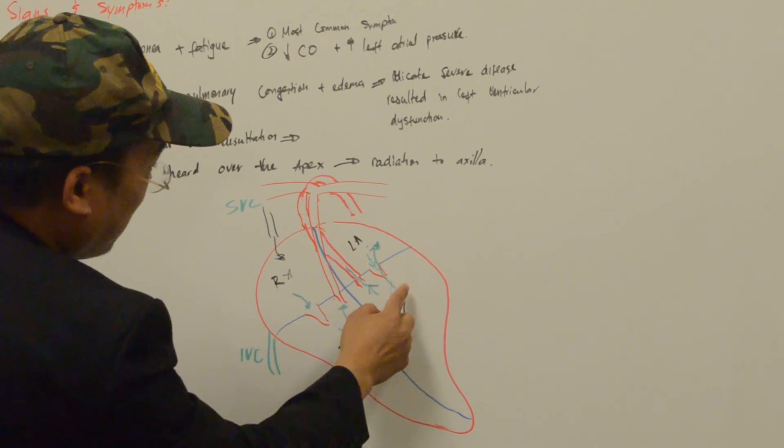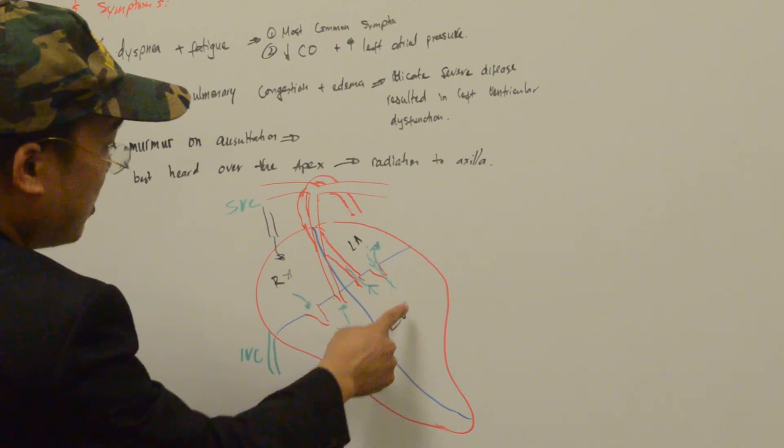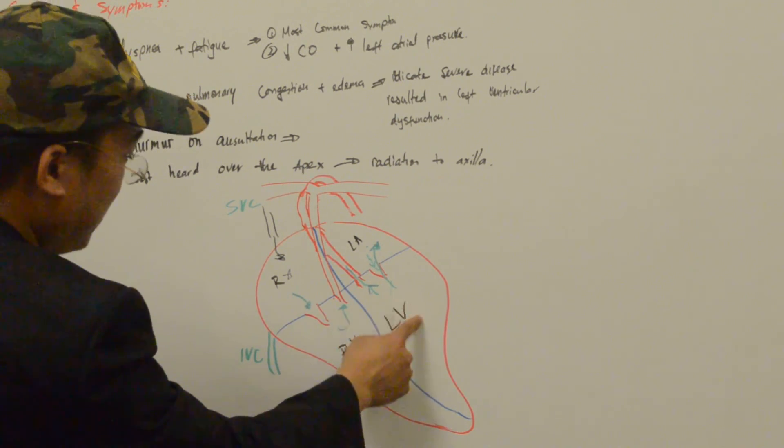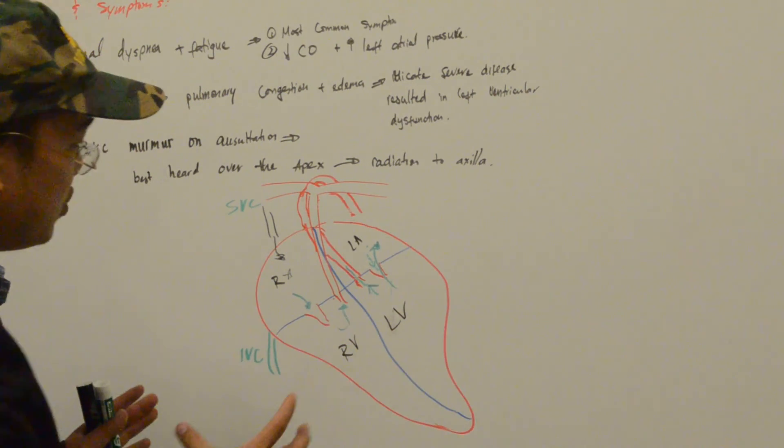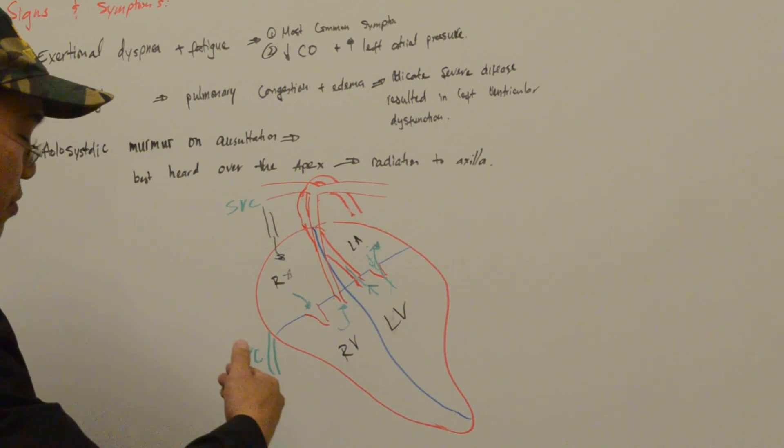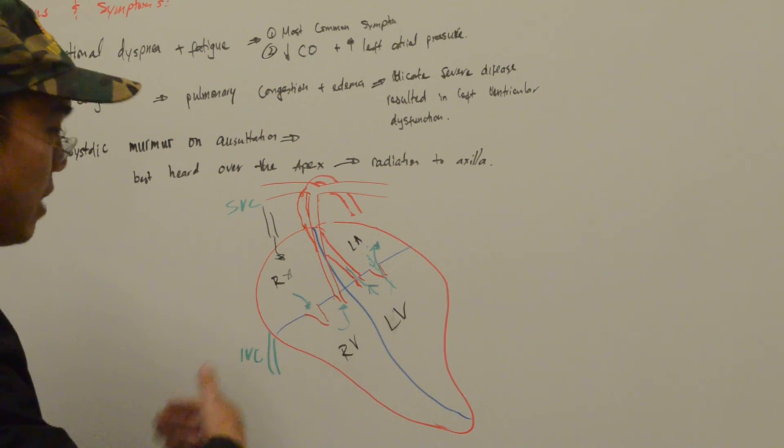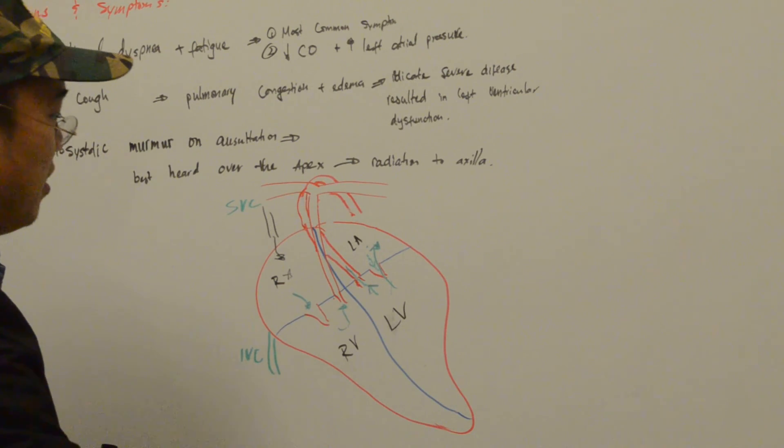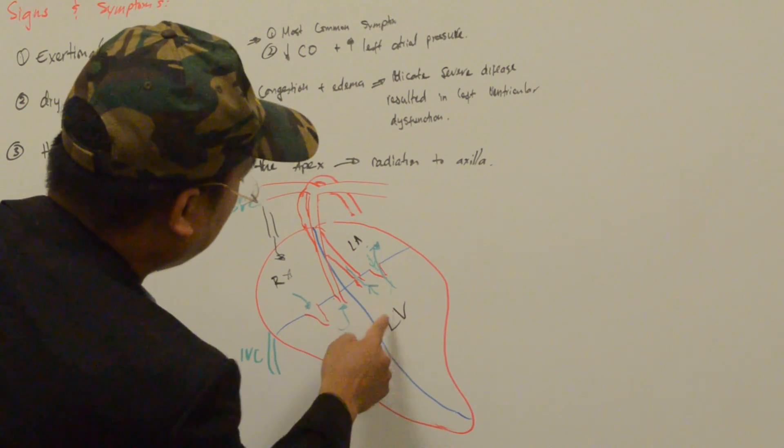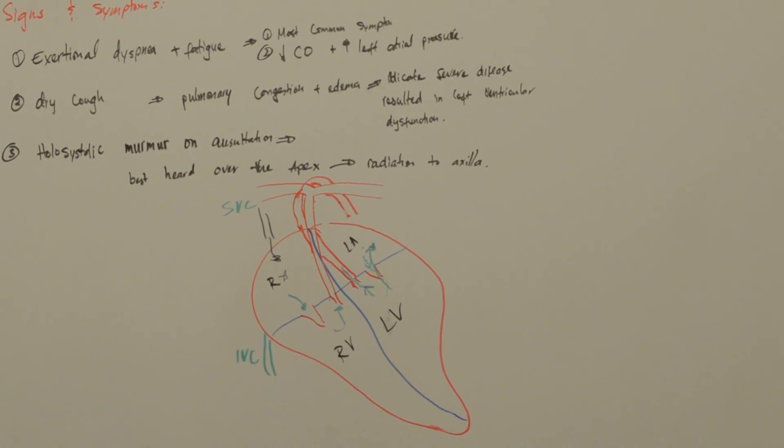But because there is mitral valve incompetence, blood flows backward through the mitral valve during the systolic phase. It's holosystolic because the mitral valve regurgitation occurs throughout the systolic phase of the cardiac cycle. It is best heard over the apex and usually radiates to the axilla.